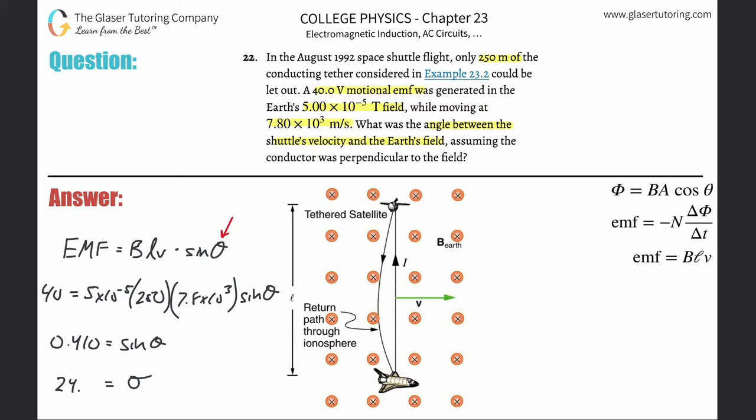So that is the angle now between the velocity and the magnetic field.